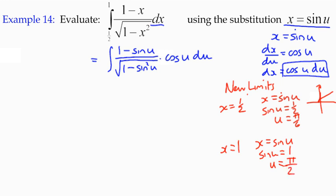My new limits are π over 6 at the bottom instead of one-half, and π over 2 at the top instead of 1. When you do your new limits, it's possible that what was the lower value becomes the larger value in your substitution. That's just the way it goes. The lower one stays in the lower place.